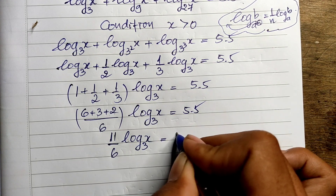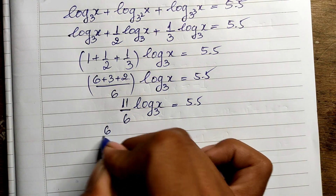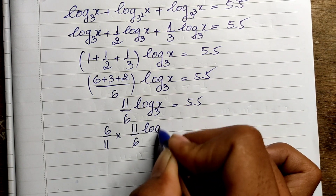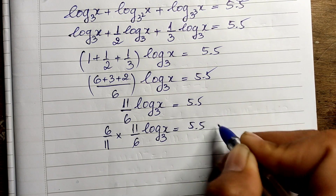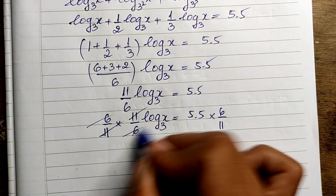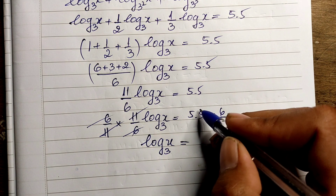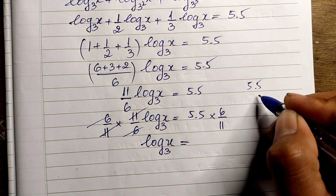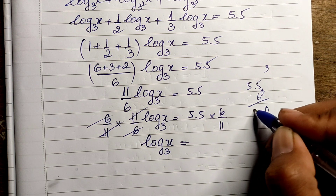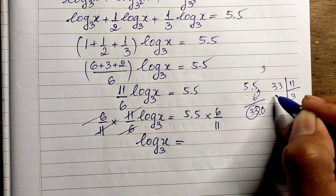Now I multiply both sides of the equation by 6 divided by 11. On the left, 11/6 and 6/11 simplify to 1, so we get log base 3 of x equals 5.5 times 6 divided by 11. That gives us 33 divided by 11, which equals 3.